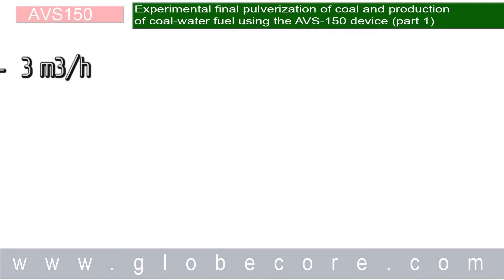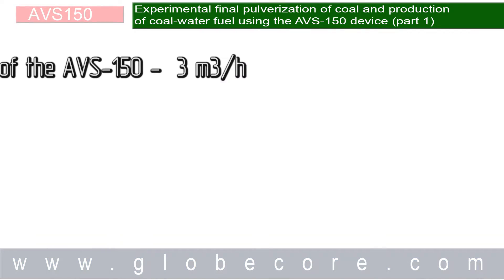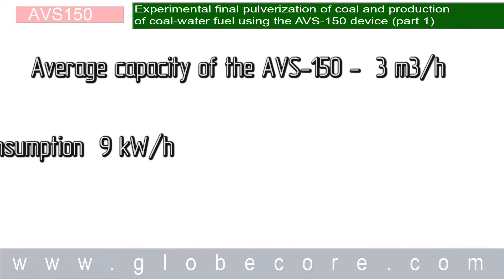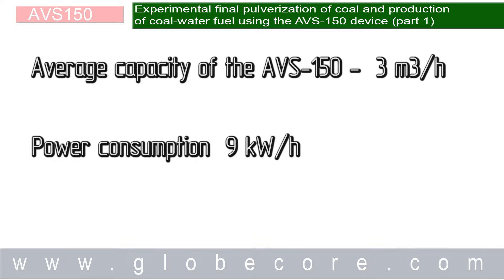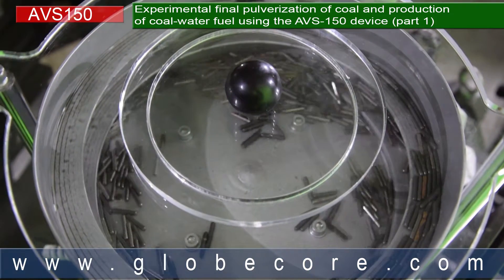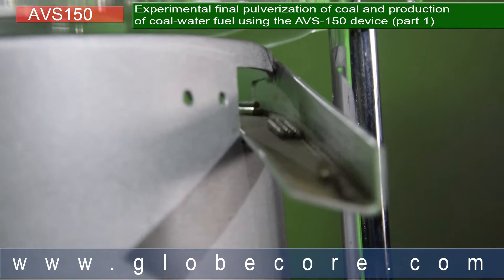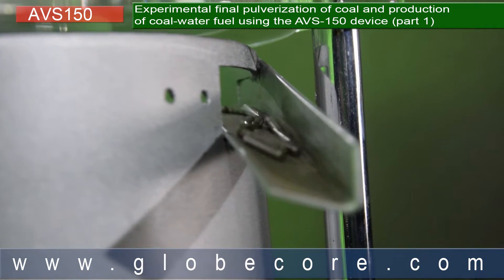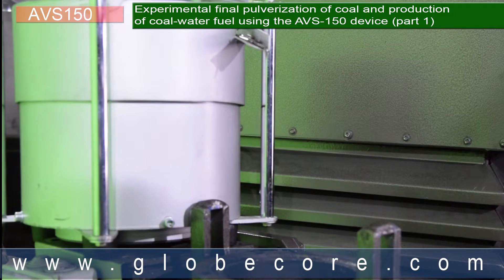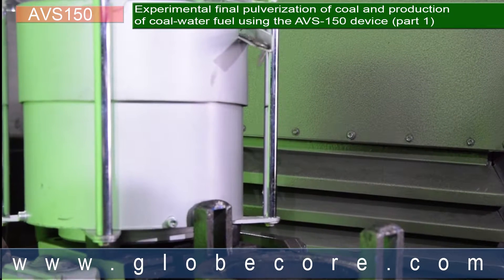The results of the experiment led to the following conclusions. Average capacity of the AVS150 device in a continuous stream will be 3 cubic meters per hour, with 9 kilowatt hour power consumption. The use of plasticizer is not required due to the intensive mixing in our device. Operation of the devices can be made continuous, since additional ferromagnetic particles to replace the worn ones are added automatically by a portioning device.